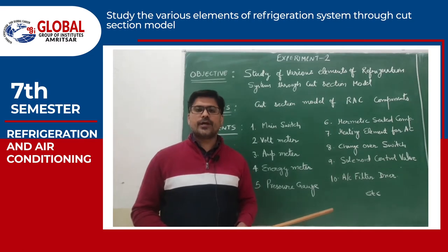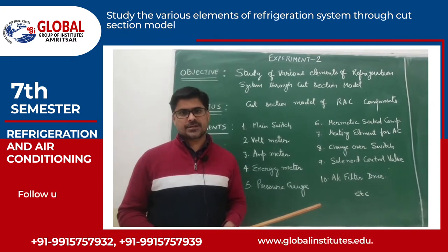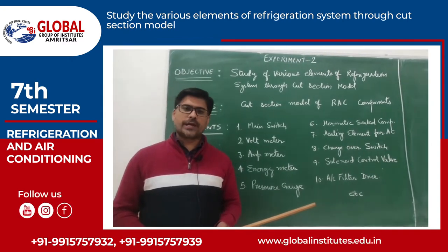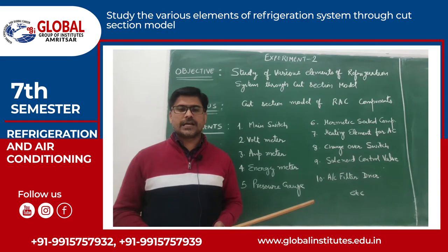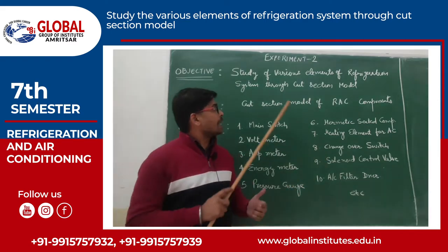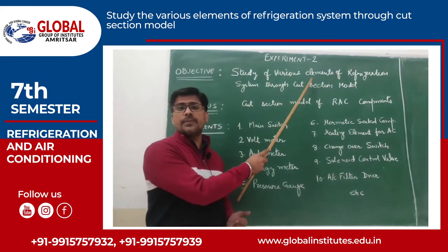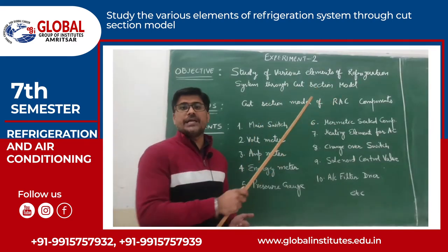Good morning students. Today we are going to understand the various components of a refrigeration and air conditioning system. The main components of a refrigeration and air conditioning system are: compressor, condenser, capillary tube as an expansion device, and evaporator. Our objective is to understand the various elements of a system through a cut section model.